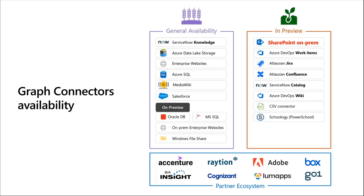Additional preview connectors include Jira, Confluence, and ServiceNow Catalog. We already had ServiceNow Knowledge Base GA and the catalog is currently in preview. There's also Azure DevOps wikis, a CSV connector, and Schoology, which is mostly for education-space customers.